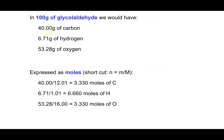In 100 grams of glycolaldehyde, we have 40 grams of carbon, 6.71 grams of hydrogen, and 53.28 grams of oxygen — just getting that from the percent composition. We can convert this to moles: the number of moles equals mass in grams divided by molar mass. So 40 divided by 12.01 gives 3.3 moles of carbon, and 6.71 divided by 1.01 gives 6.66 moles of hydrogen.